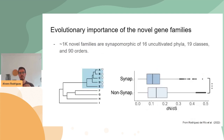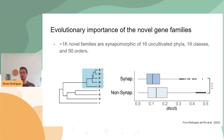Another very striking finding was that there are almost 1,000 novel gene families that are synapomorphic of entire phyla or classes. These gene families are very specific to particular lineages but widely distributed within that lineage. For example, the white gene family in the left figure is synapomorphic of the blue lineage because it is present in all genomes from that lineage but nowhere else. This means these gene families may have been very important for the evolution of these deep nodes of the tree of life. We also observed that these synapomorphic families have lower dN/dS values, meaning there is stronger negative selection acting on them than on the rest of gene families.